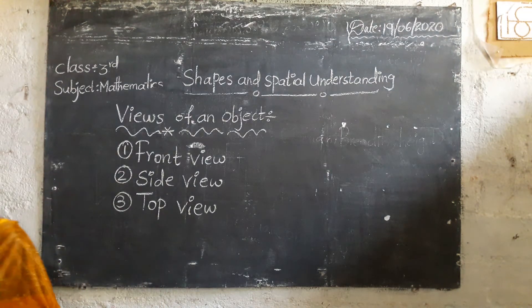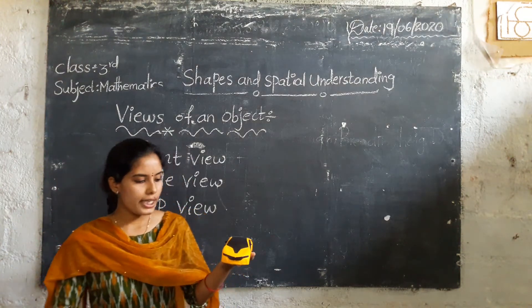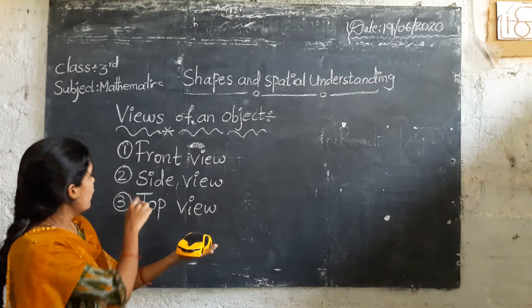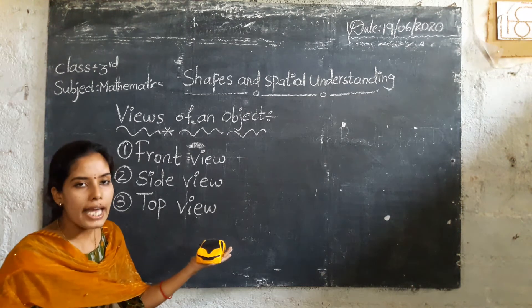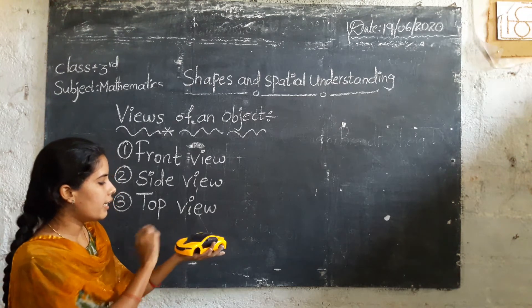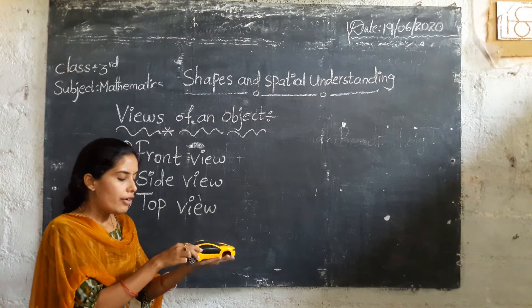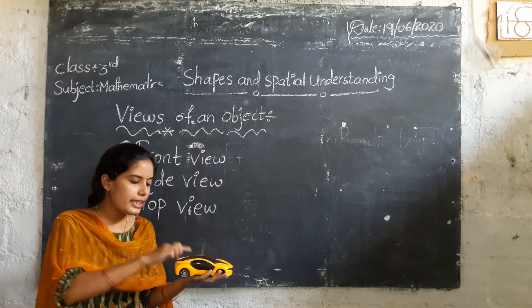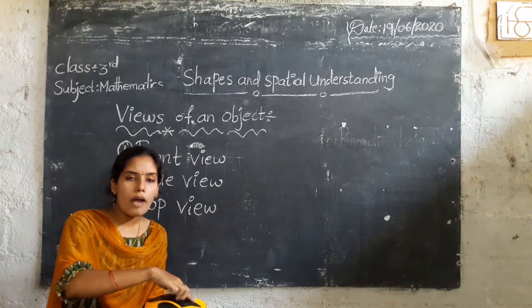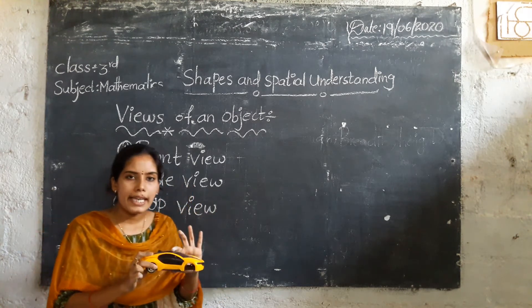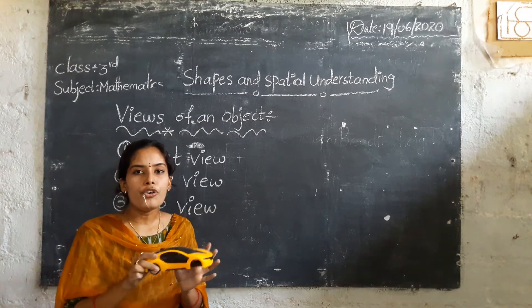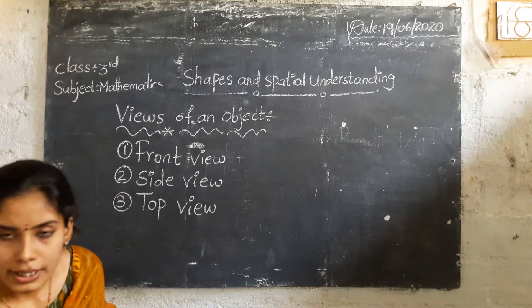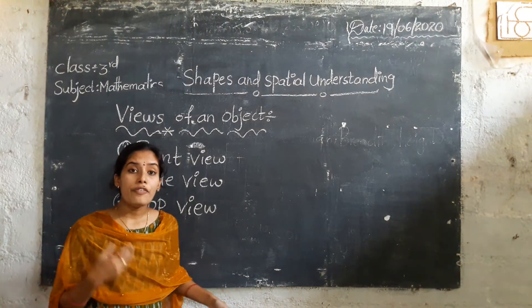Let us see one more example. This is a car. If we see the front side, what we observe — lights, mirror, like that. When we change the direction, what we observe — that is car door, tires, like that. When we see the top side, we observe the top part of the car. The object is the same, but if we change the direction, the view is different. Every 3D object has different views. In our daily life also we are seeing different views of objects.